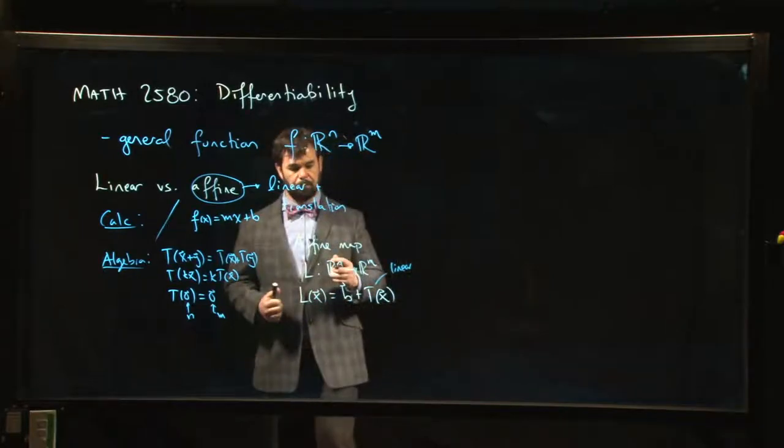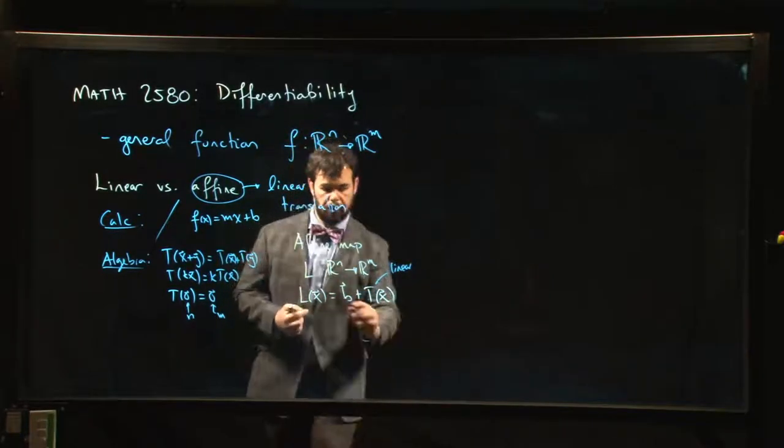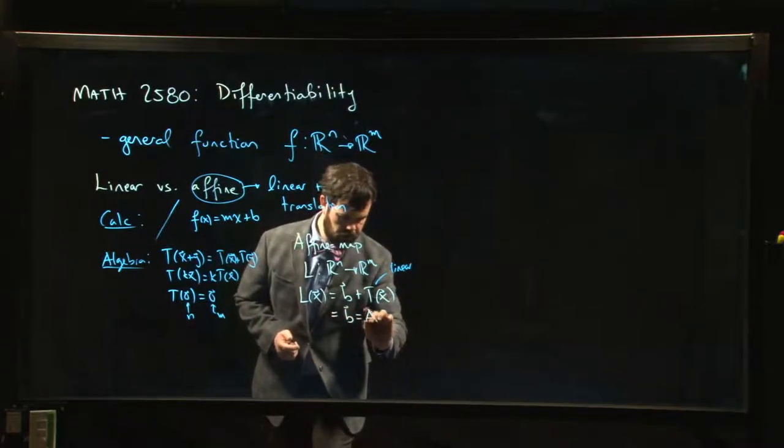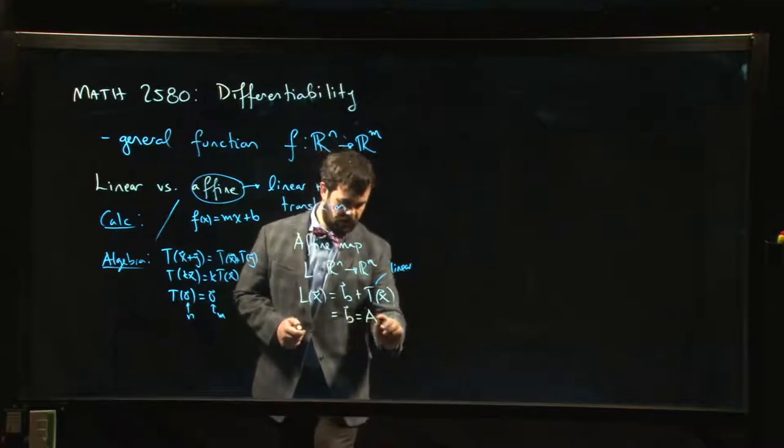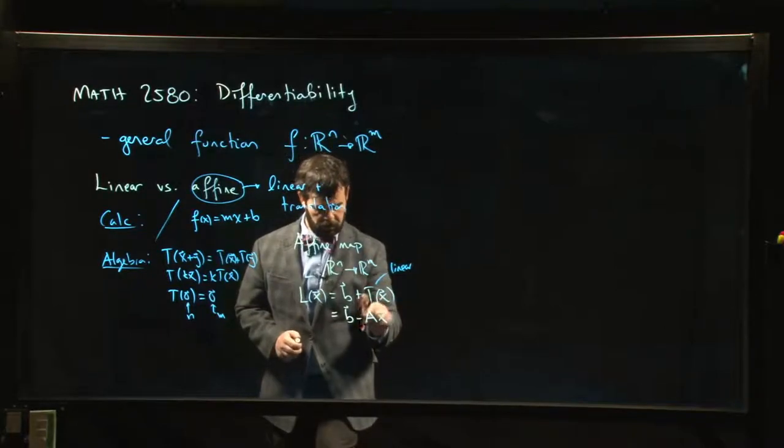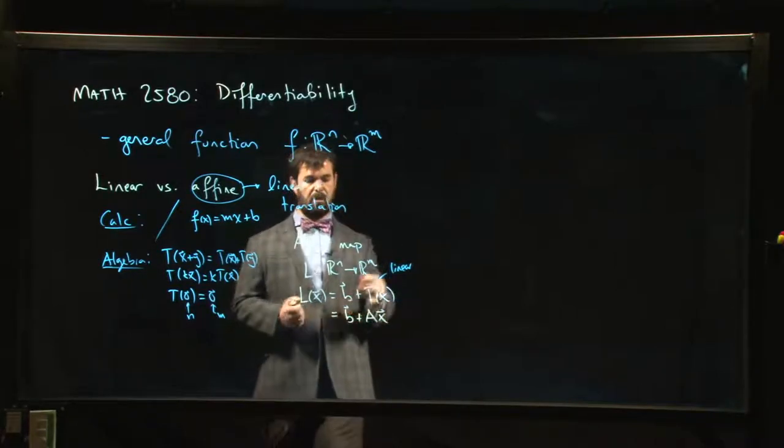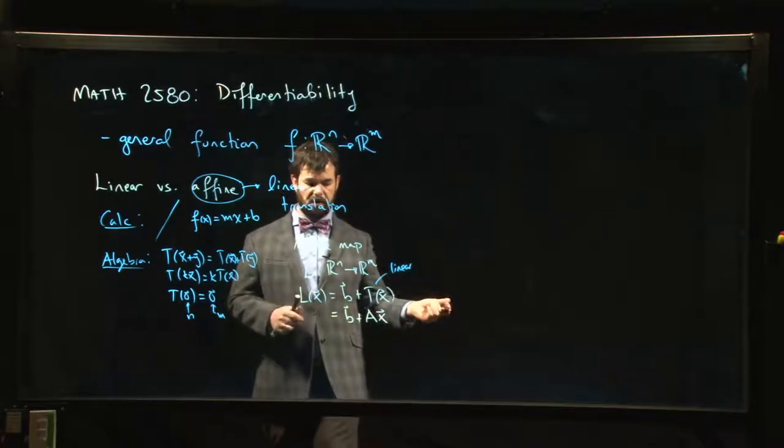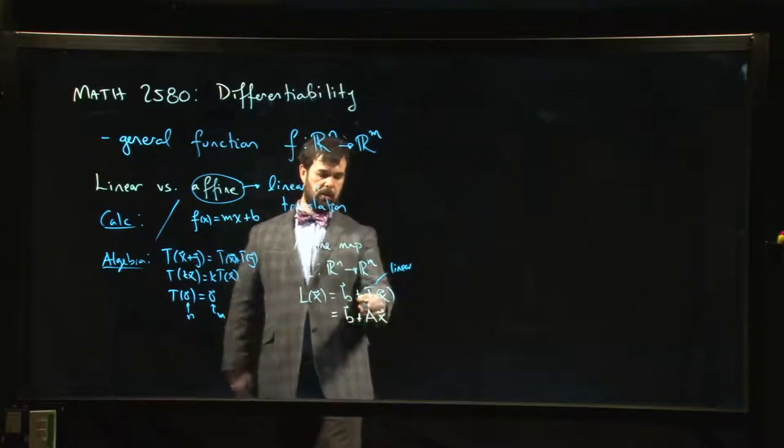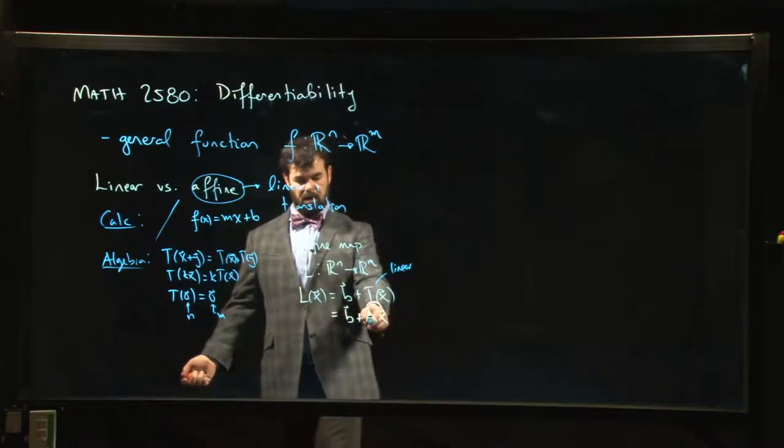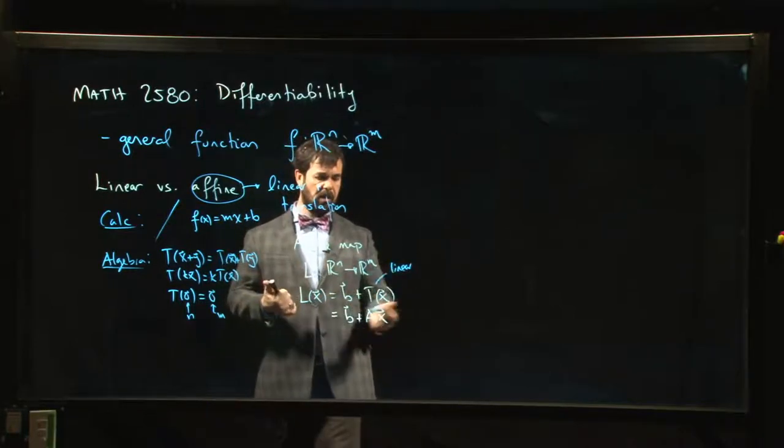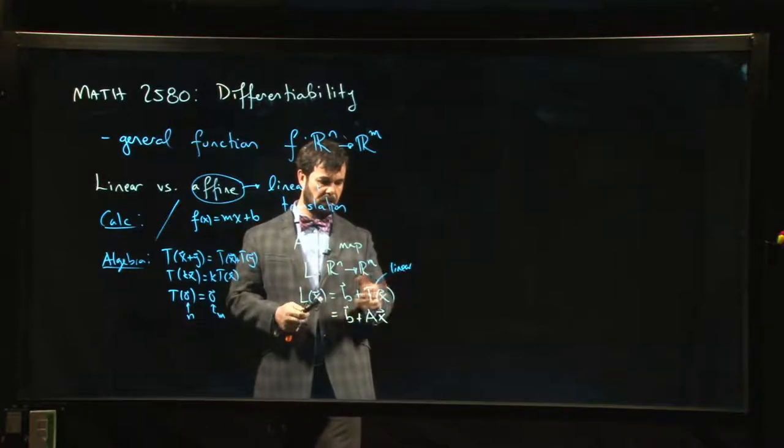b plus T(x), where T is linear. Of course if you've chosen a coordinate system, if you've chosen a basis, then you can always write your linear map as a matrix A times your vector. So b + Ax. This is the general 'mx + b' in several variables, where this matrix A acts something like slope.